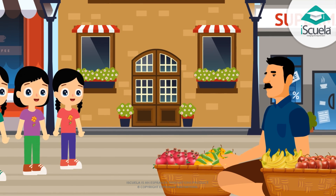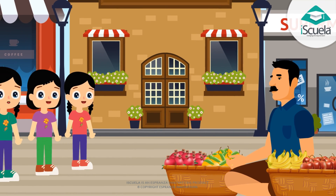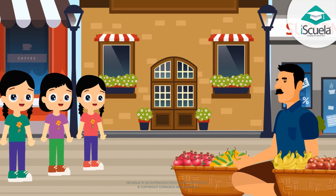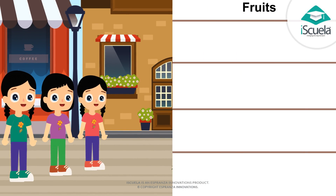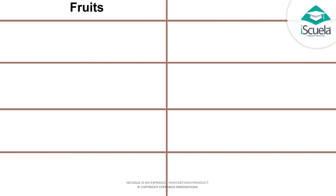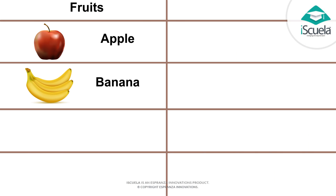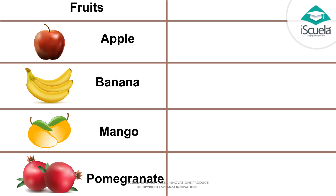Let's make the table. In the first column, let's write the names of fruits: apple, banana, mango, and pomegranate. And in the second column, the number of fruits.